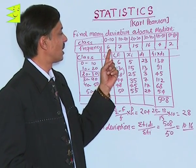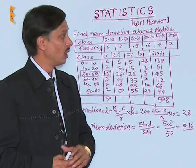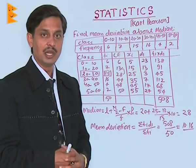Their respective frequencies are 6, 7, 15, 16, 4, and 2. So first of all we will check how to calculate the median.